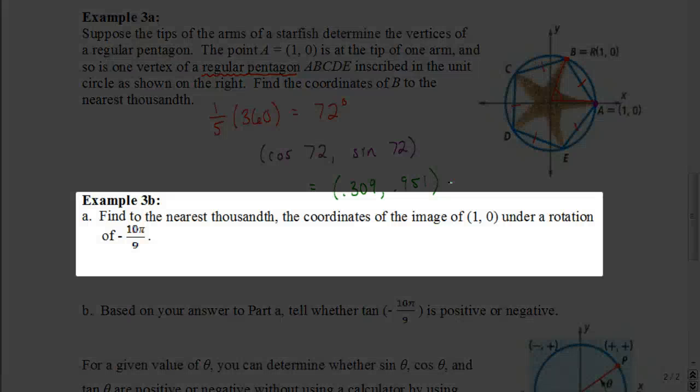Now the next one says, find to the nearest thousandth the coordinates of the image (1, 0) under rotation of negative 10π over 9. Now, it seems pretty simple, because all we have to do is take the cosine of negative 10π over 9 and the sine of negative 10π over 9. But here's the difference between this and these other problems. These other problems, everything was in degrees. This one is in radians. Our calculator is set to be in degrees. So in order for us to be able to do this problem, we have to change our settings on our calculator.